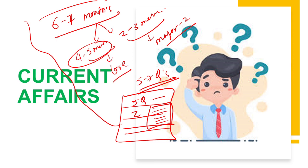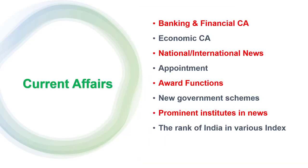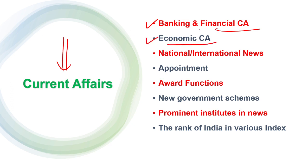The most important topics in current affairs for RBI Grade B are: first, banking and financial related updates — for example, RBI giving a license to a new bank, new savings accounts, mobile applications, and circulars released by RBI. Second, economic current affairs — new tax policies, RBI's monetary policy changes, inflation-related changes, and government economic initiatives. These banking, financial, and economy-related current affairs are a very important area.